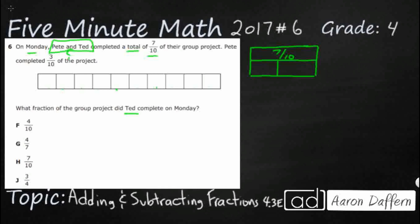So we have one part which is going to be three tenths. That's Pete. Really what we're looking for is how much did Ted complete? That's our question mark. So that lets me know we're going to have to subtract the two because that's the relationship we see.